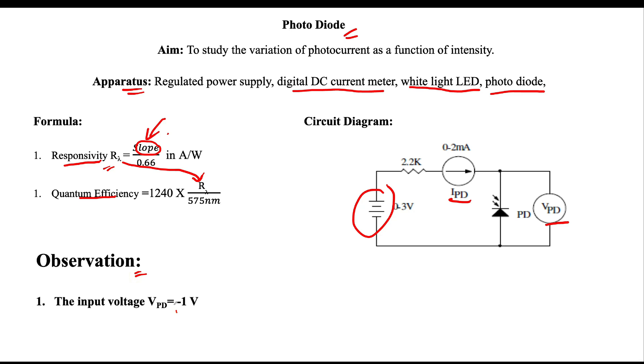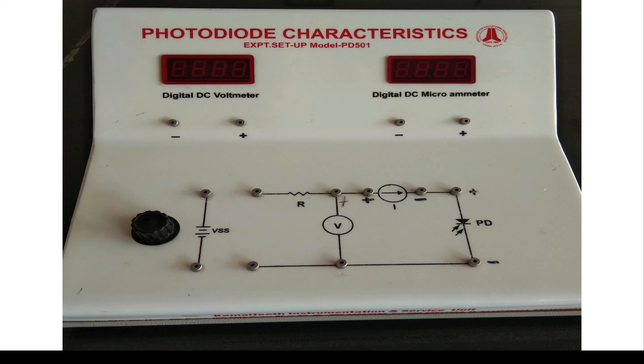Let us see the connection of the photodiode. As we already know, there is a digital voltmeter and digital microammeter. Initially, we need to connect the digital voltmeter, so positive to positive and negative to negative. The digital microammeter connection must be positive to positive, negative to negative.